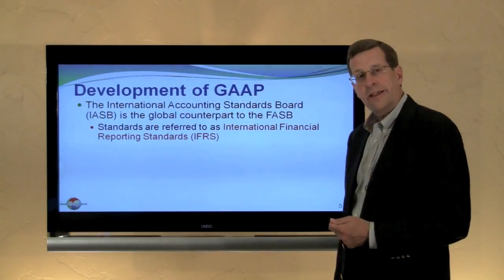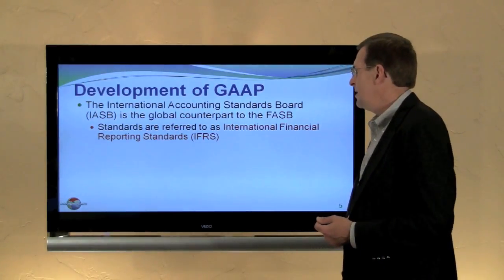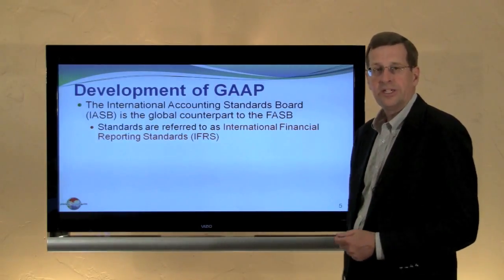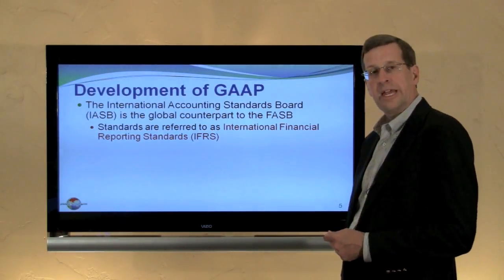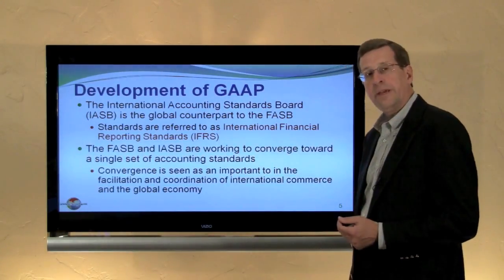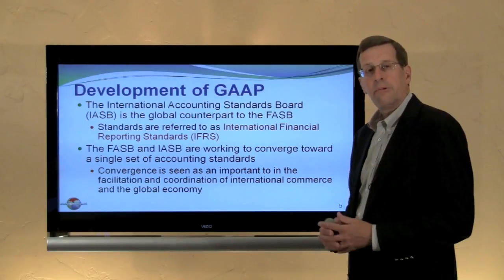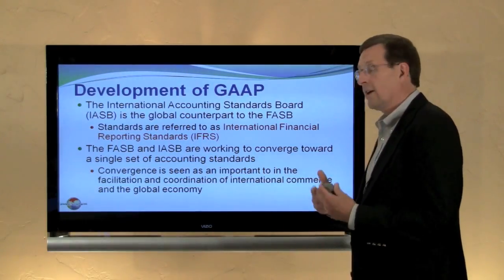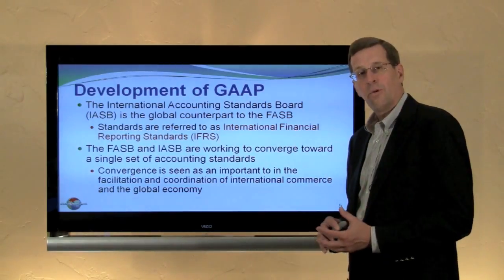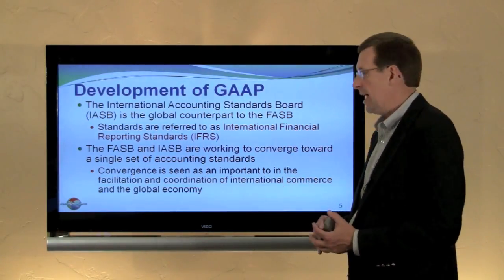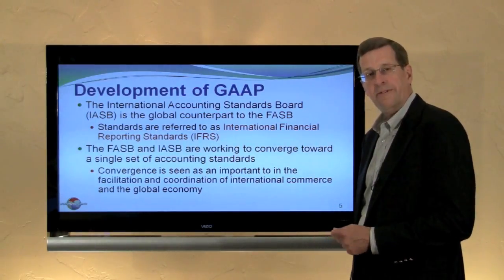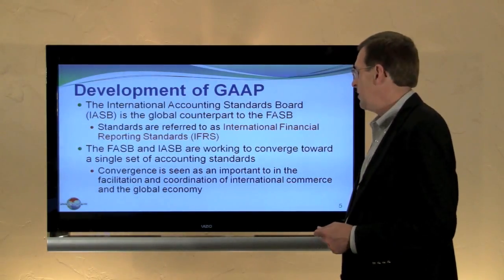The International Accounting Standards Board is the global counterpart to the FASB. Standards they develop give the foundation to the International Financial Reporting Standards, or IFRS. The FASB and IASB are currently working toward a process of global harmony — a convergence in accounting standards — so that perhaps one day there will be one set of worldwide accounting standards. It's possible they may eventually themselves converge into a single standard-setting body.